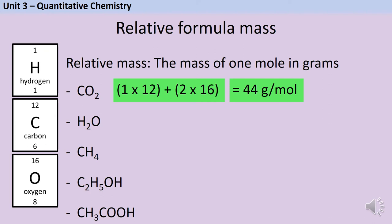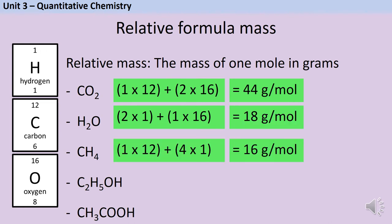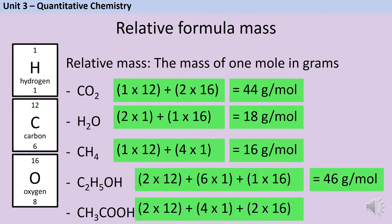If you're not already confident calculating relative formula mass I'd go watch the video that explains how to do this, but if you are then pause the video here and quickly work out what the relative formula mass of the remaining 4 compounds are. Hopefully that wasn't too challenging as these are quite easy compounds. So for water you should have an answer of 18 grams per mole, for methane 16 grams per mole, for ethanol 46 grams per mole, and for ethanoic acid 60 grams per mole.